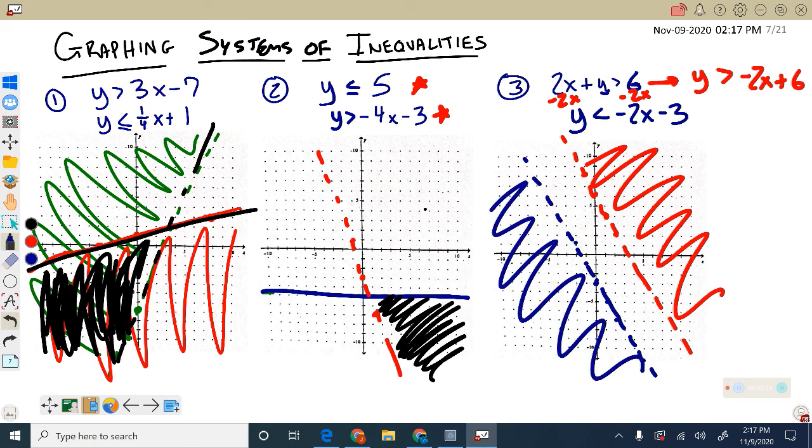So where do we have overlap? We don't have any overlap. It's not happening. This is no solution because no matter what we plug in for x and y, we will never get a value that works for both equations because we have no part of that graph that is overlapping the shading.